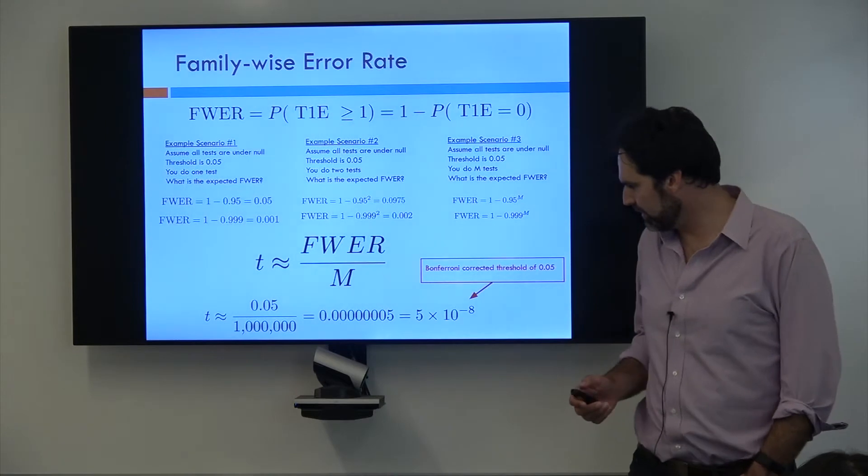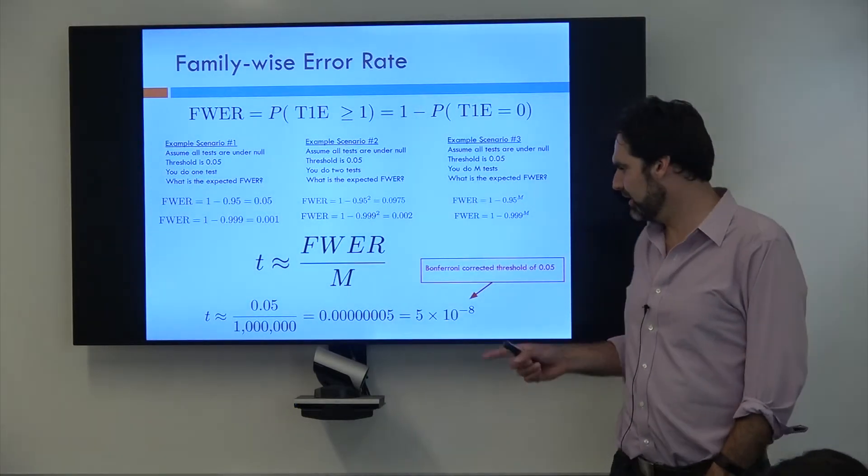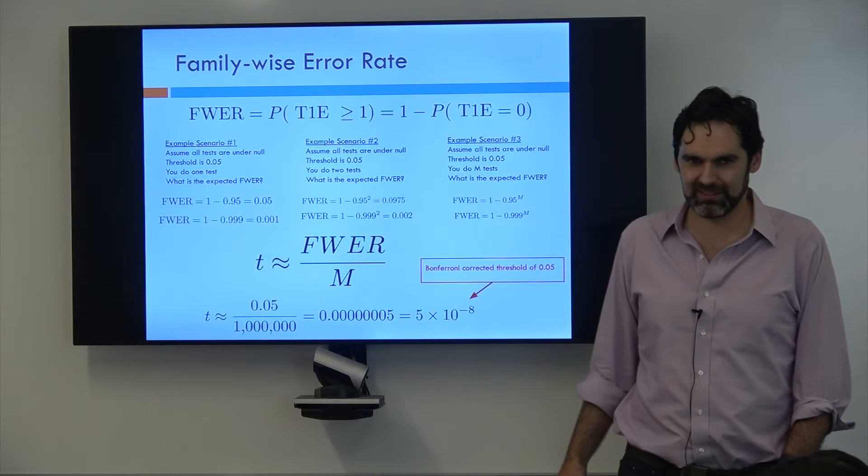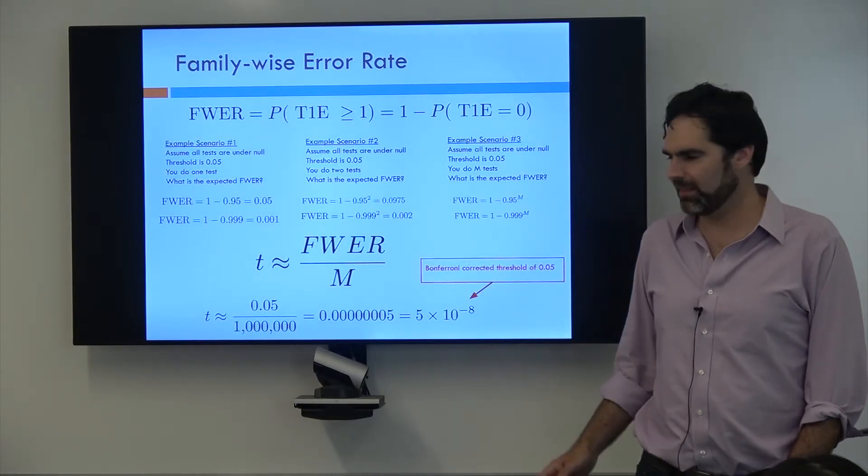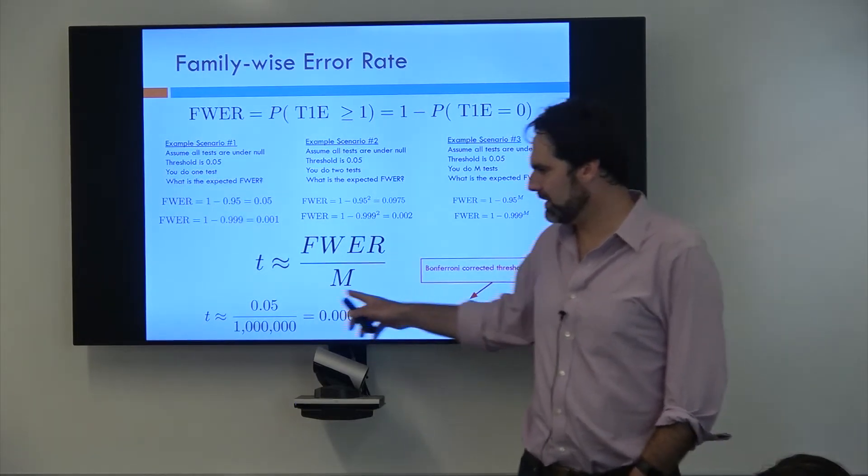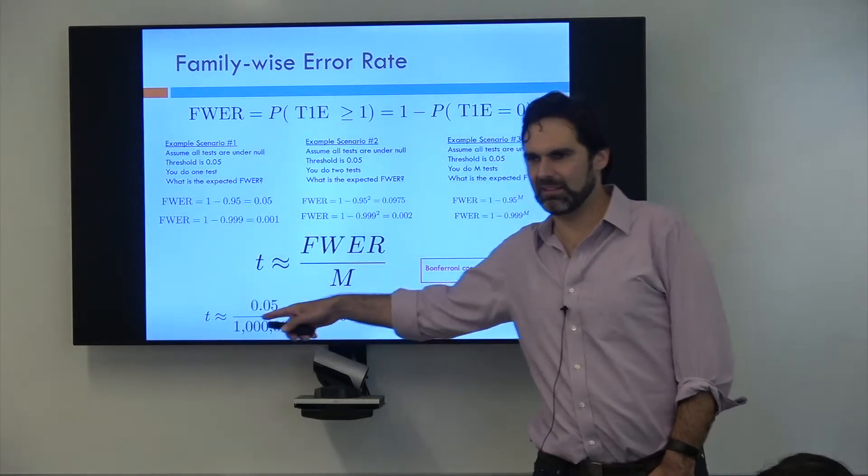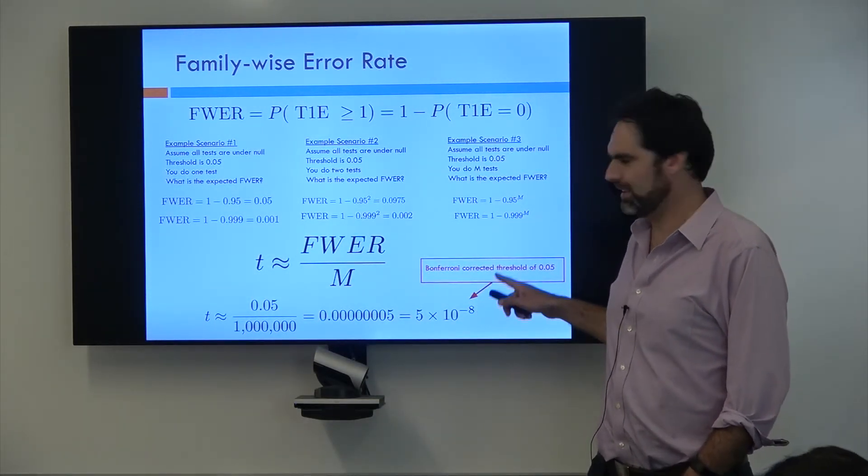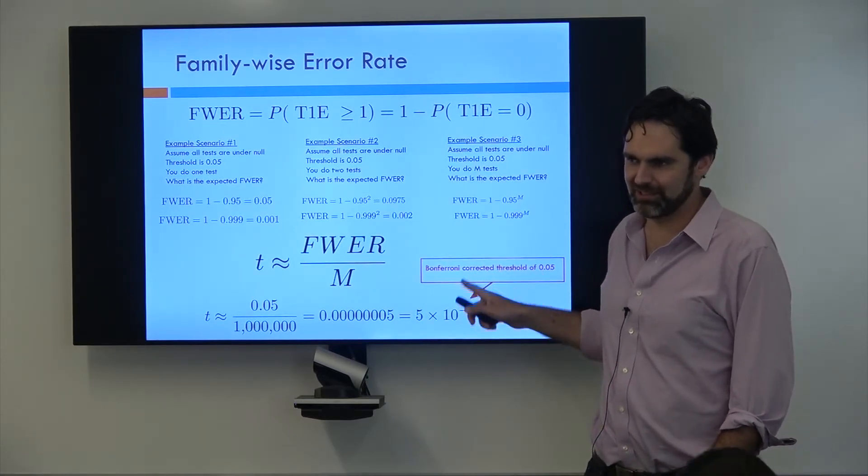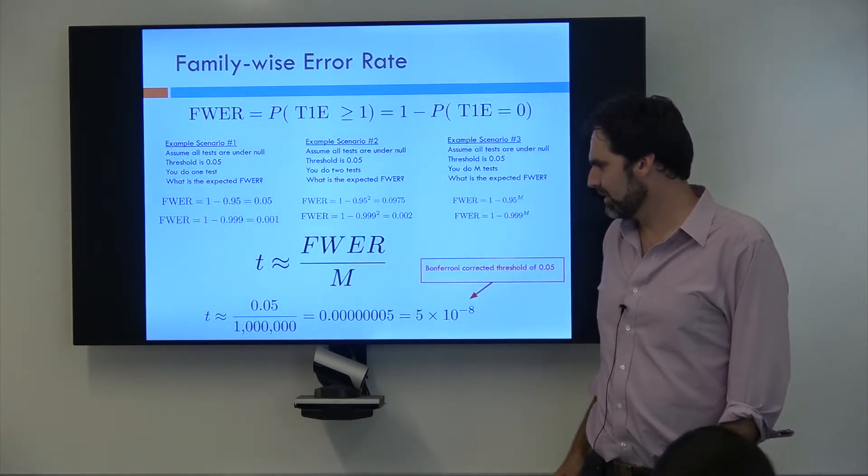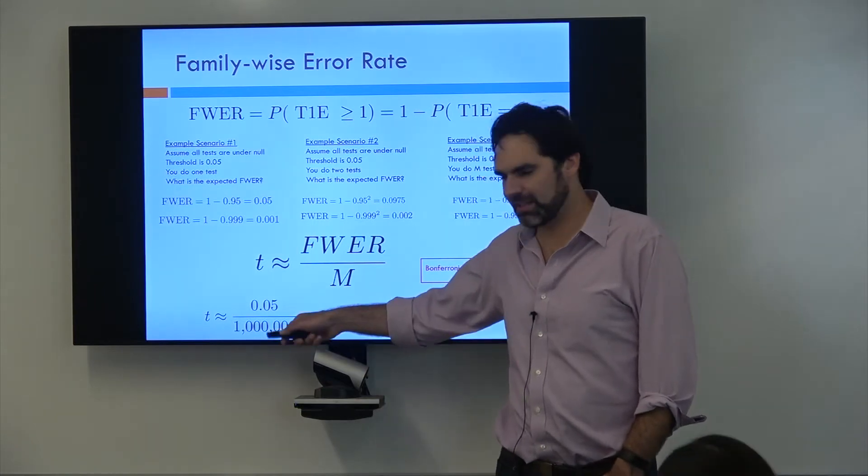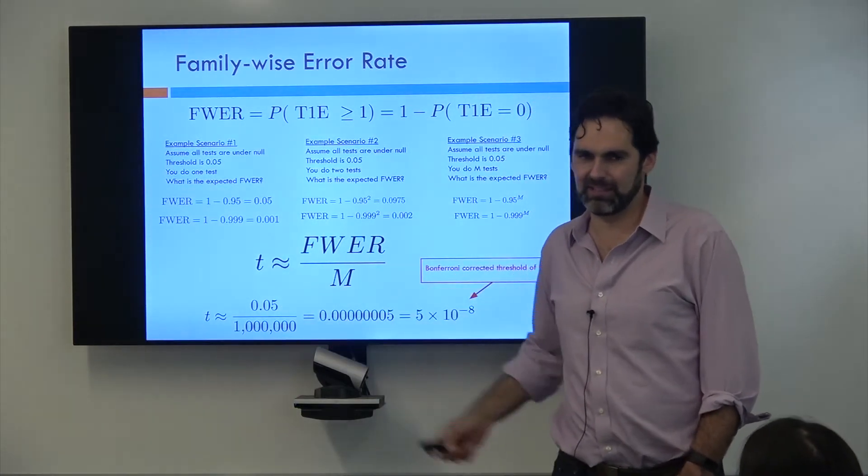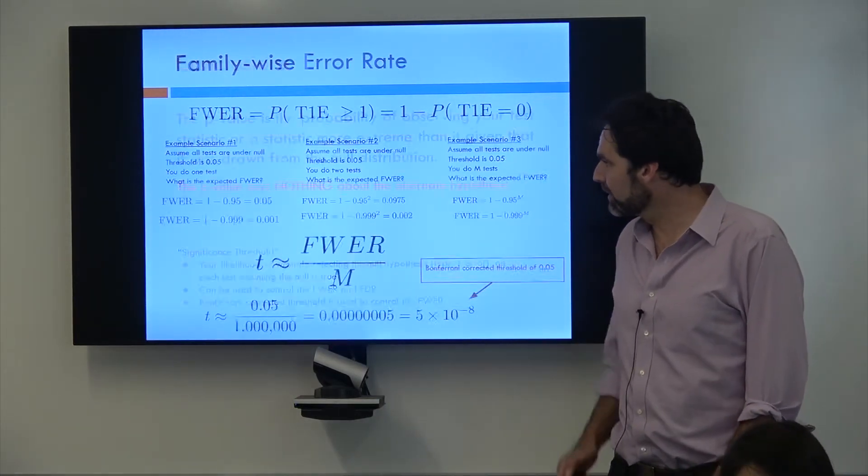A lot of times you'll hear this phrase when you go to lectures that they used a Bonferroni corrected threshold of 0.05. And what that means is that they set their threshold in such a way that it controlled the family-wise error rate at 0.05, is how you should interpret this. And this little division operation is called Bonferroni correction.